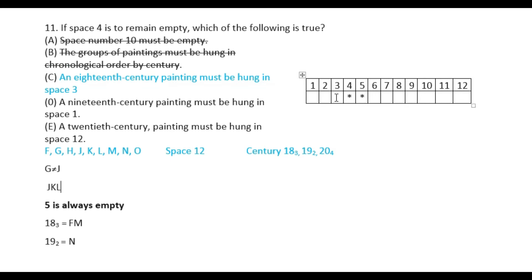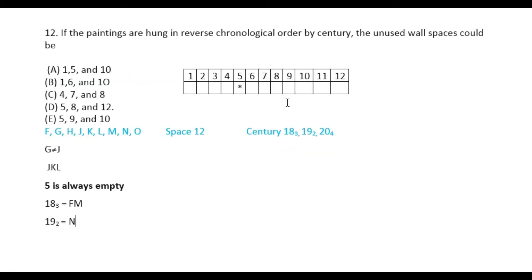The answer is option C. If the paintings are hung in reverse chronological order by century, the unused wall spaces could be — which spaces would remain unused in that scenario?